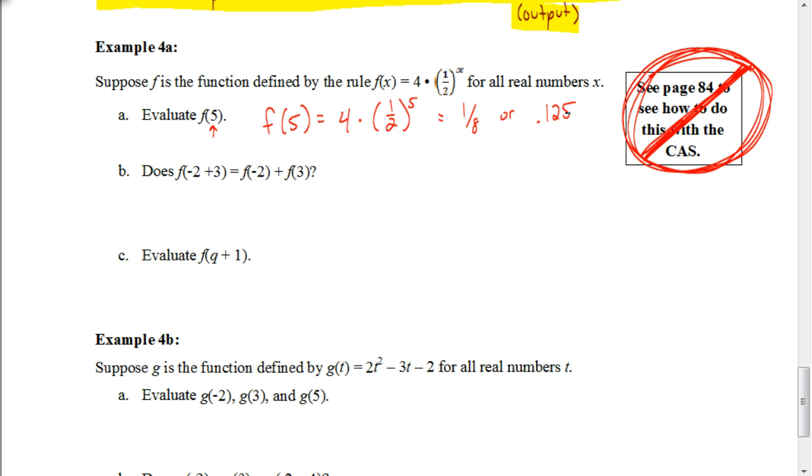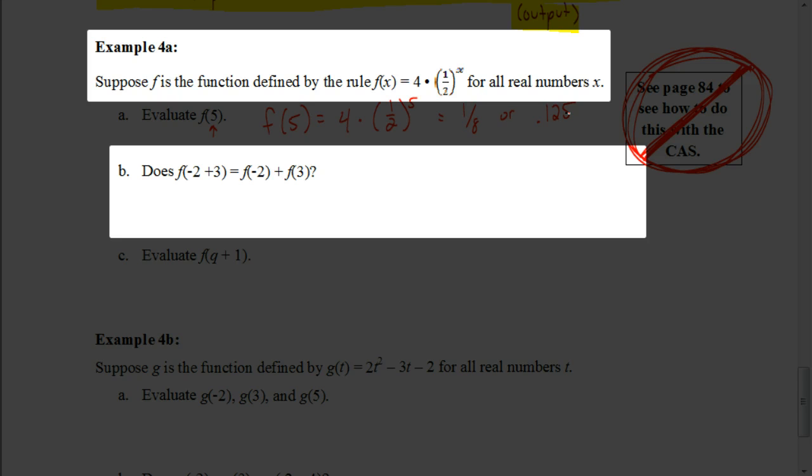There's a good question. Does F of negative 2 plus 3, is that the same as F of negative 2 plus F of 3? I don't know. Let's find out. Well, first, what's in parentheses here? F of negative 2 plus 3 means I can simplify that to be F of 1. So, this we could do without our calculator because we're just going to take 4 times 1 half to the first power. Well, 1 half to the first power is 1 half, and half of 4 is 2. So, I want to see, well, would F of negative 2 plus F of 3, would that equal 2?